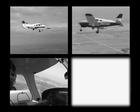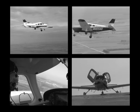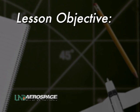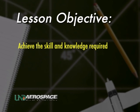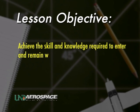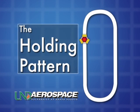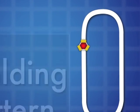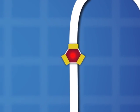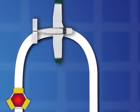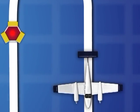According to the UND Warrior, Aero, Seminole, and SR20 standardization manuals, the objective of holding is to achieve the skill and knowledge required to enter and remain within a published or non-published holding pattern. When you think about it, a holding pattern is nothing more than a big oval formed in a racetrack shape that is designed to keep an aircraft in a specified space for a specified amount of time.